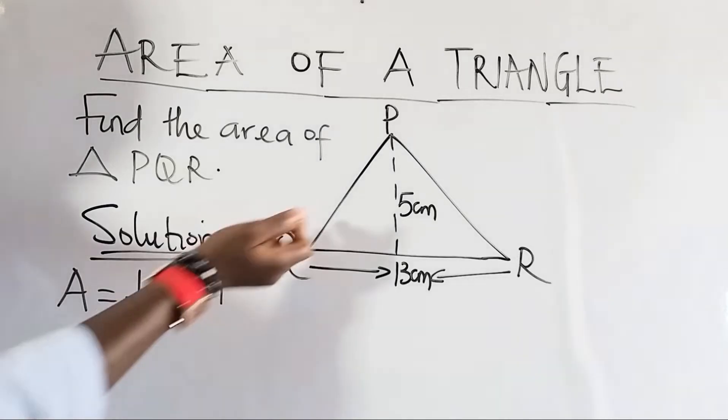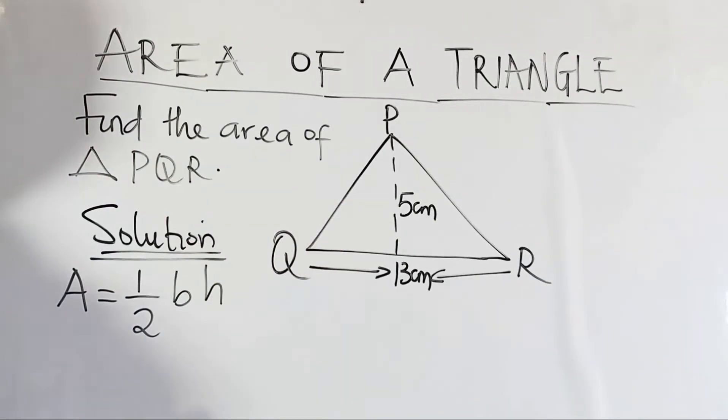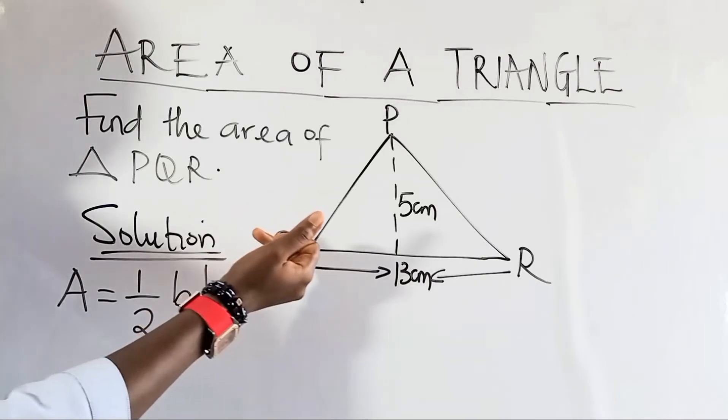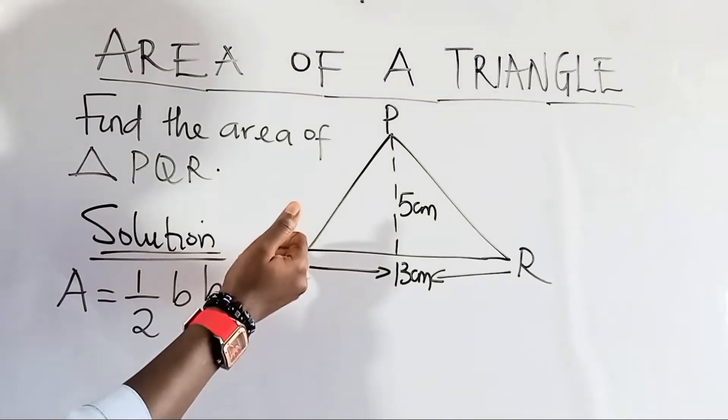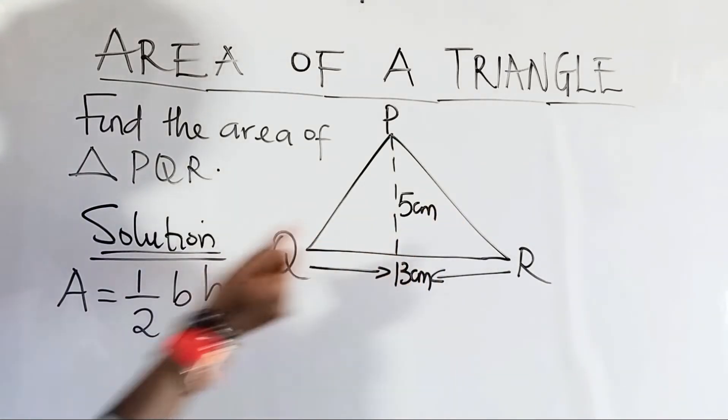So now in this triangle, let's identify if we have the base and the height. In any triangle where you have to find the area, any side of the triangle can serve as the base. So in this case now, length QR will serve as our base.